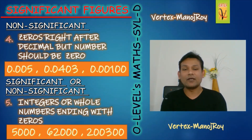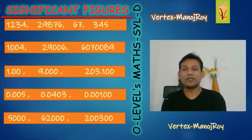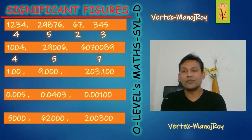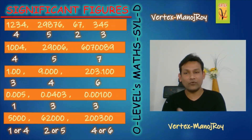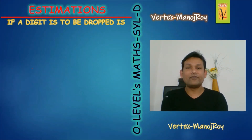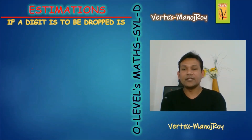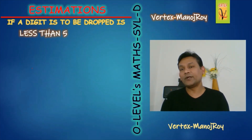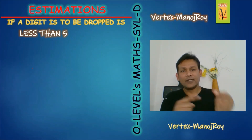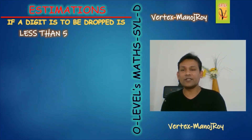Now I want to move to estimation. Before estimation, you can review the significant figures results we covered. In estimation, we have just three rules to understand. Whatever digit is to be dropped — it can be less than five, more than five, or equal to five. There are three categories. Case one: if a digit to be dropped is less than five.